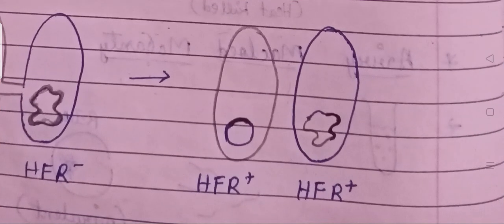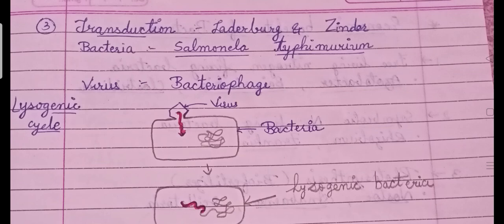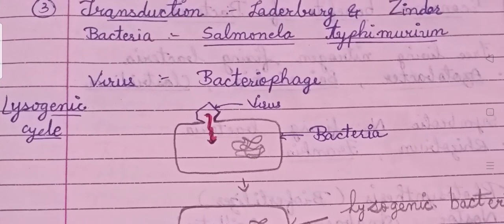The first mode of reproduction was transformation, the second was conjugation, and the third mode is transduction. In transduction, genetic material is transferred from one bacterium to another with the help of a virus — a bacteriophage. This was first studied by Lederberg and Zinder using Salmonella typhimurium bacteria.